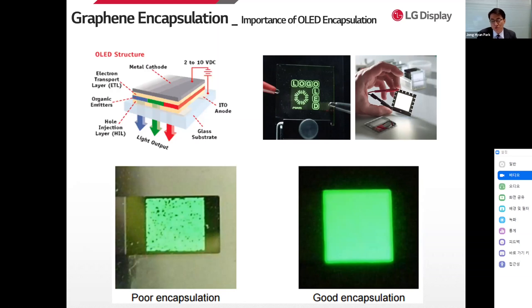Encapsulation also serves as a mechanism to protect the device from applied mechanical and physical impact. If the performance of OLED encapsulation is bad, as shown in the picture, a lot of dark spots are generated and it cannot be used as a defective product.